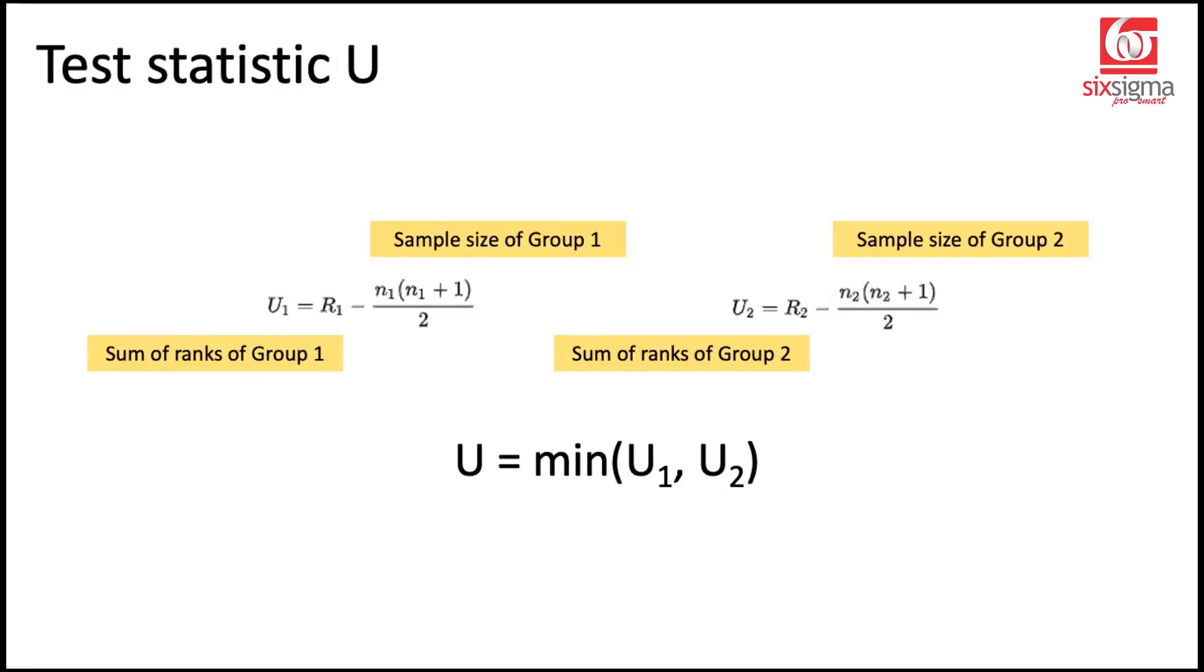Now, this has a slightly different test statistic. I will explain these terms and give a practical demonstration. The test statistic is denoted by U, which is the minimum of U1 and U2. U1 is calculated using the first sample: U1 equals R1 minus N1 times N1 plus 1 divided by 2. The terms are R1, the sum of ranks of group one, and N1, the sample size of group one. Similarly, U2 uses R2, the sum of ranks of group two, and N2, the sample size of group two. It is not mandatory that the sample sizes be equal in a Mann-Whitney U test.